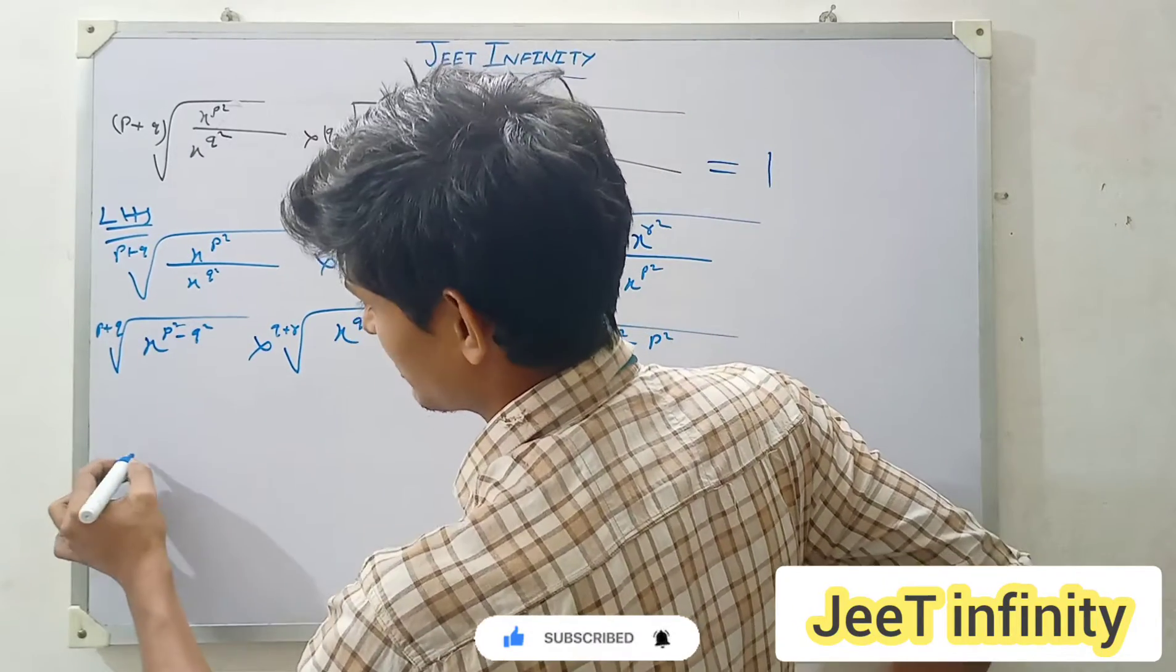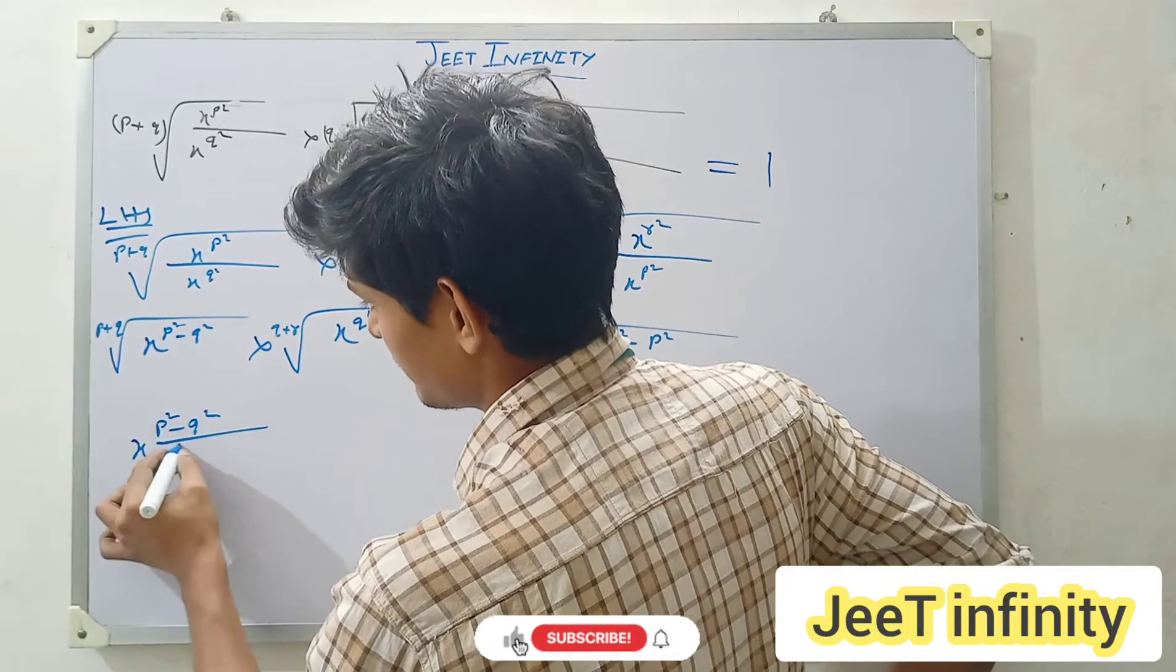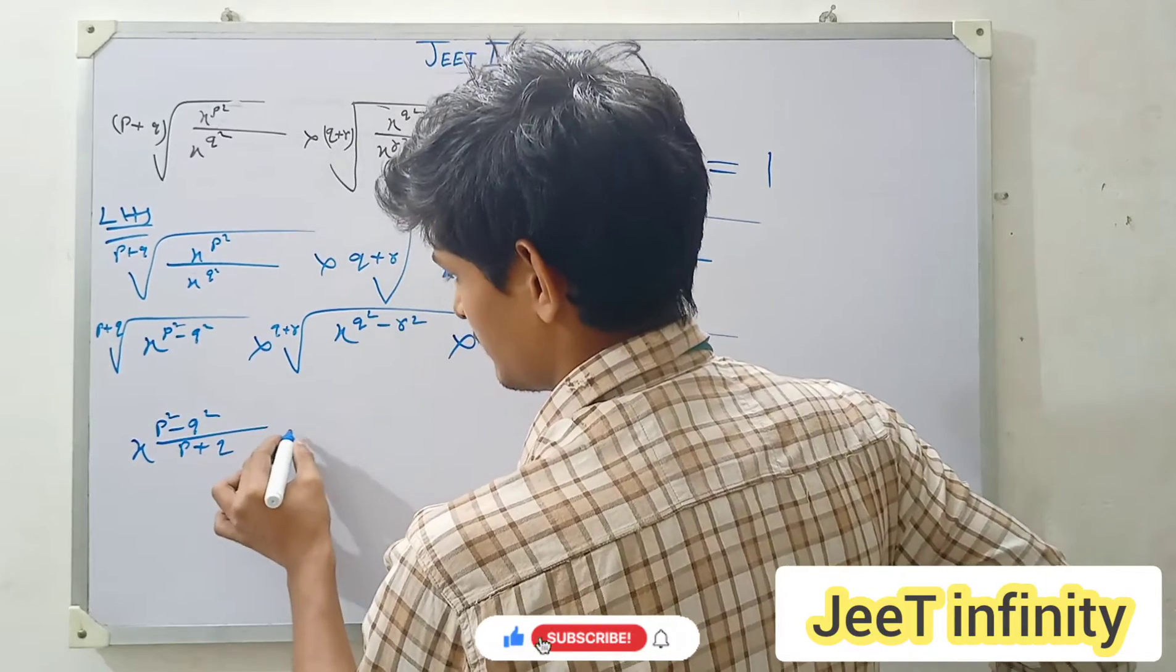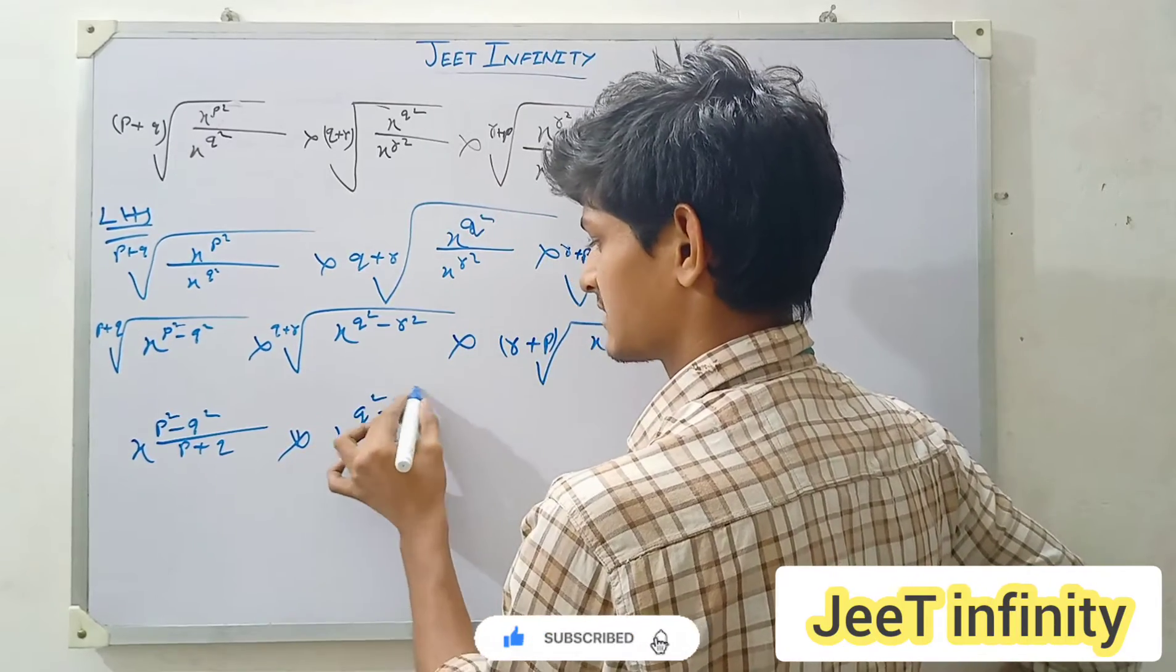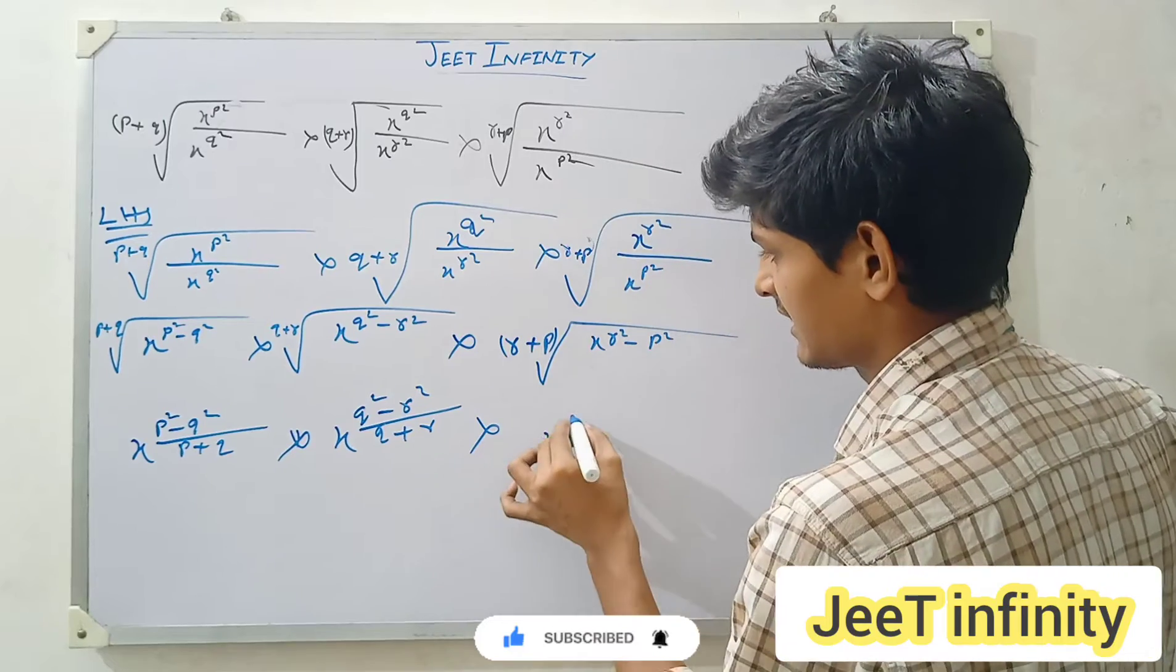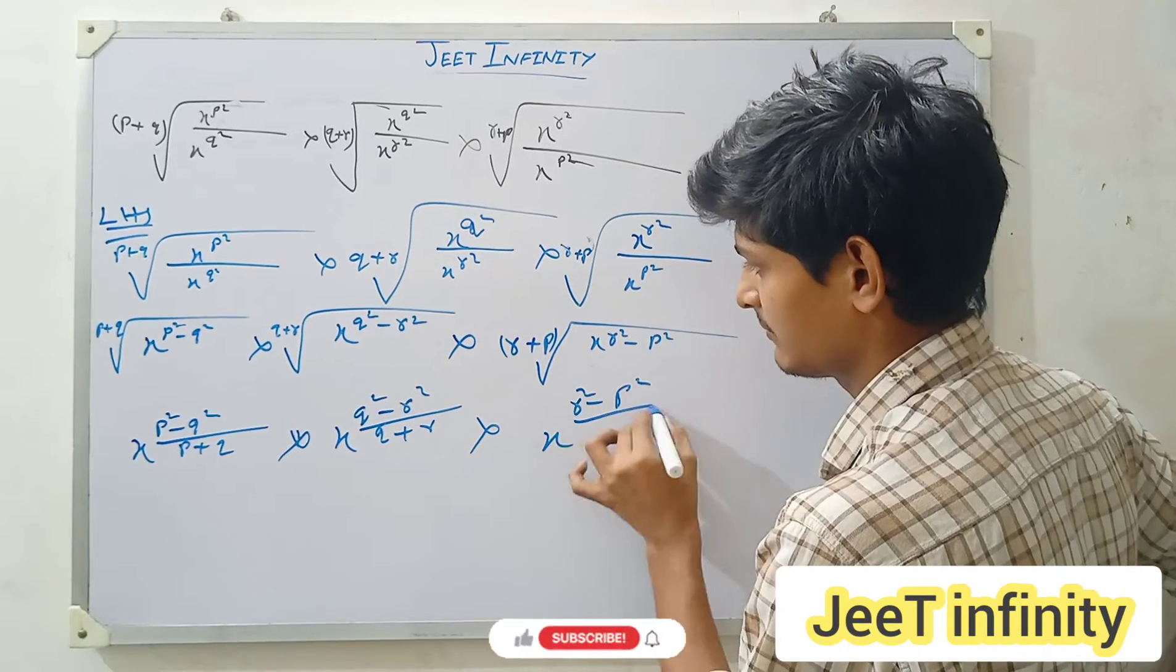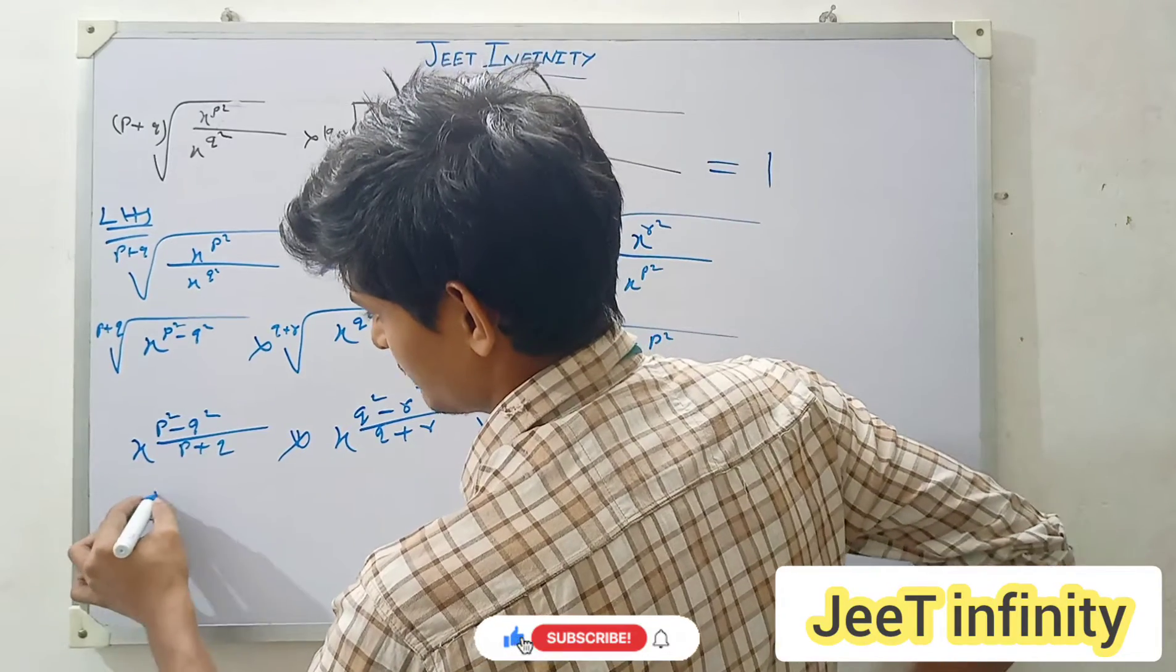Root means x to the power (p squared minus q squared) over (p plus q), x to the power (q squared minus r squared) over (q plus r), and again you will write here x to the power (r squared minus p squared) over (r plus p). Okay, then here what you will write? (p plus q).